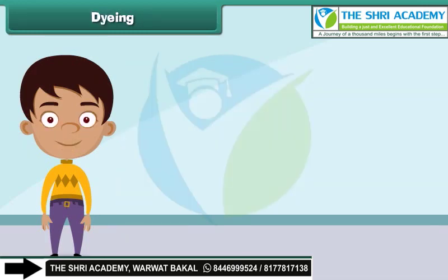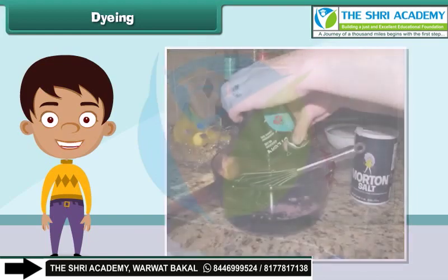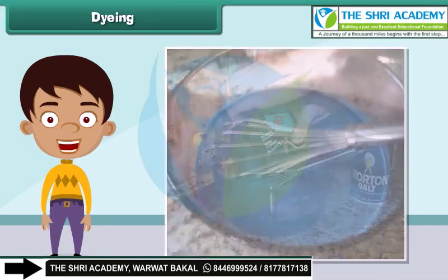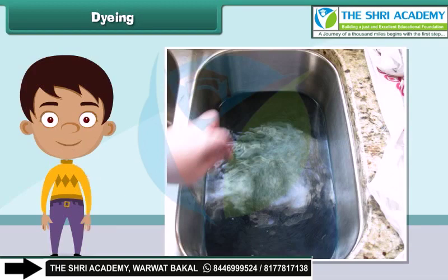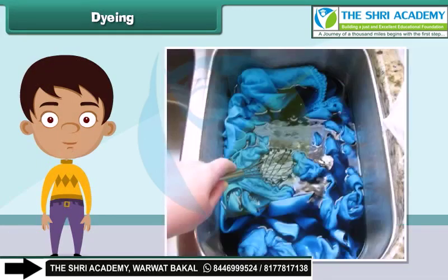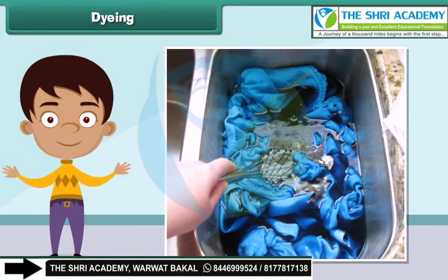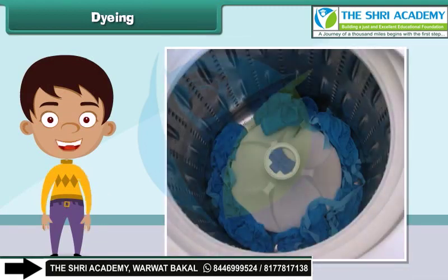Dyeing a fabric means giving a new color to the fabric. To dye a fabric, first a solution of dye and salt in warm water is prepared. Next, the fabric is dipped in the solution. Then the fabric is removed from the solution after an hour and washed. Finally, the fabric is dried.